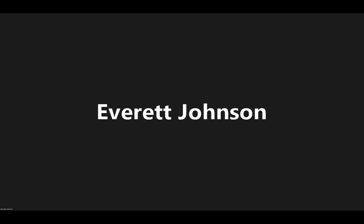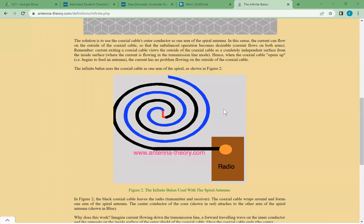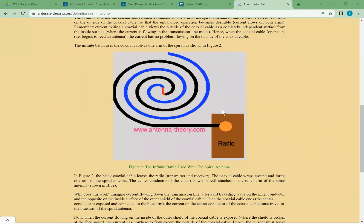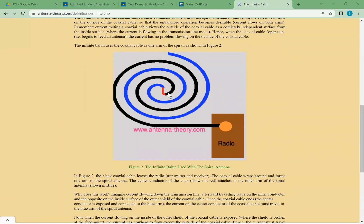There are many different types of baluns. For most spiral antennas, the most popular type is actually an infinite balun, which I want to show here on antennatheory.com. An infinite balun is when the spiral antenna arms are actually a coaxial cable. We can see here that this black stem is supposed to be a coaxial cable — it has the inner and outer cable part, and then at the center of the spiral antenna, the outer part actually stops, and the blue stem is just the inner part of the coaxial cable. I believe the infinite balun is actually the most popular use for spiral antennas.